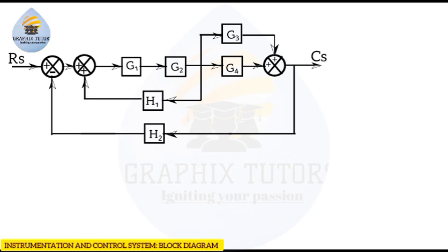Now we move to the next one: g3 and g4, which are both in parallel. When blocks are in parallel, you add both of them together, giving g3 plus g4. If you want to understand how these two signals are in parallel — similar to parallel circuits — you can also click on the link at the top right corner of the screen. So if you had a third block g5, you would add all three of them since they'd be in parallel.